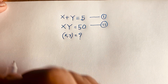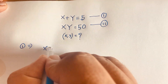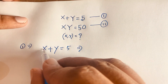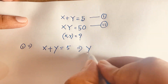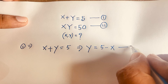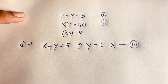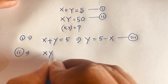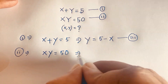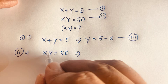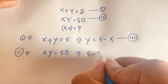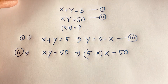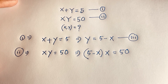According to the first equation, x plus y is equal to 5. If I take x to this side it will be negative, so I can write y is equal to 5 minus x. This is our third equation. But remember our second equation: xy is equal to 50. Here y is equal to 5 minus x, so I substitute this value into the equation, giving x times (5 minus x) is equal to 50.